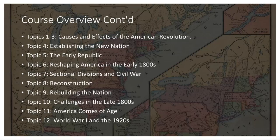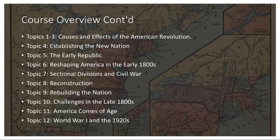Topic 7, rebuilding the nation: the late 1800s brought rapid industrialization, urbanization, and technological advancements. While these changes fueled economic growth, they also led to social inequalities and labor struggles. The Progressive movement emerged in response, advocating for government intervention to address issues such as worker rights, consumer protection, and environmental conservation. Theodore Roosevelt's presidency saw significant reforms, including the creation of national parks and the regulation of monopolies.